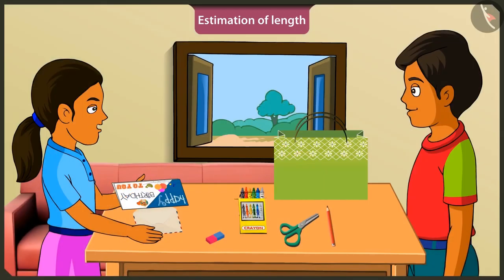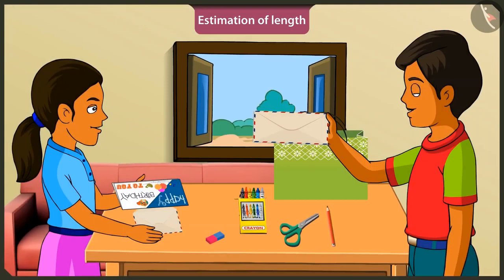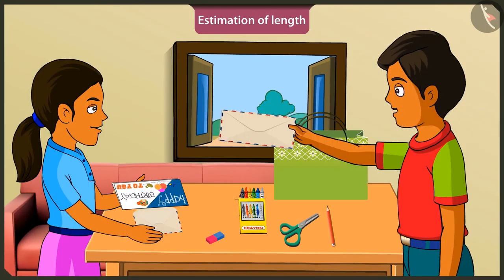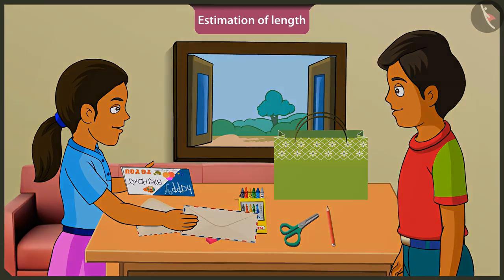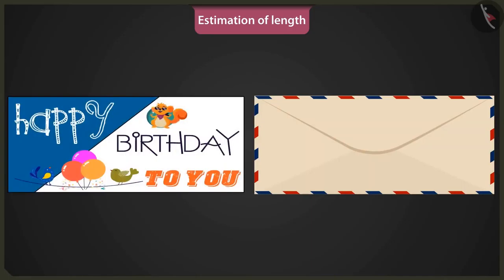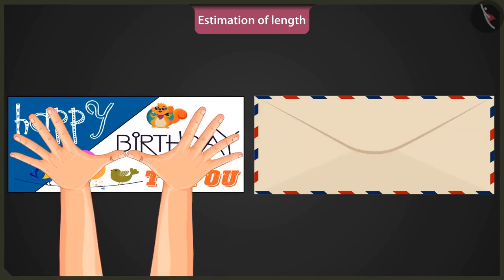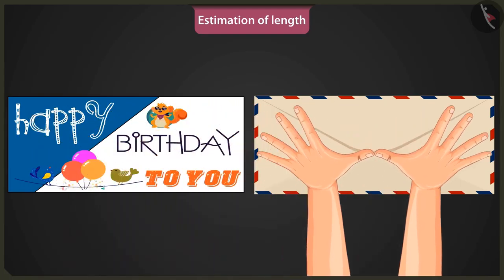This envelope is smaller than my card. Wait, I have a bigger envelope, I will give it to you — here. Seems like my card will fit into this one. How can you say that? Can you tell the approximate length of this envelope? This envelope is as big as my card, so its length would be two hand spans approximately.